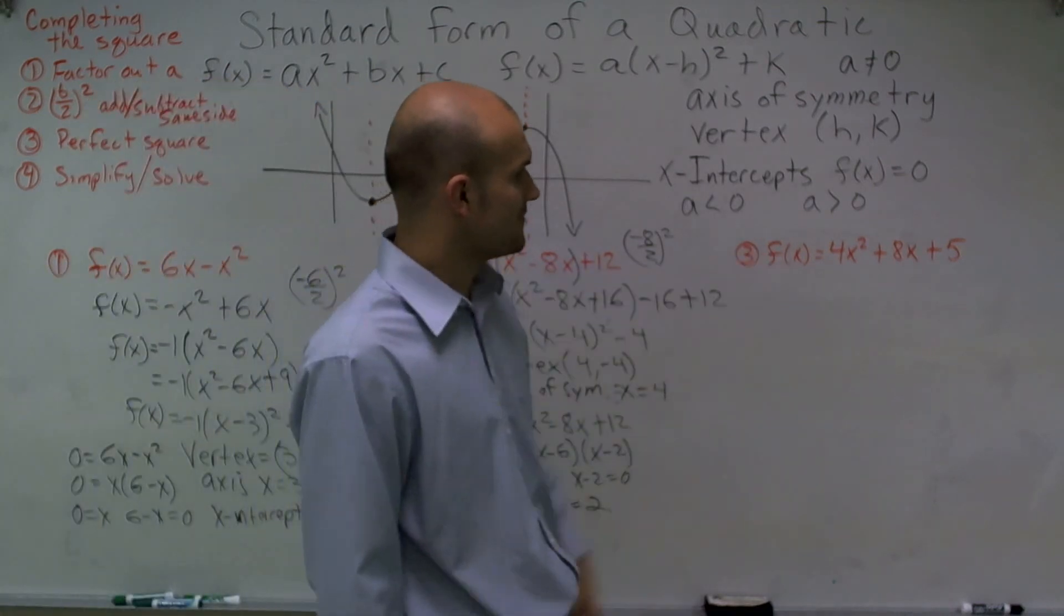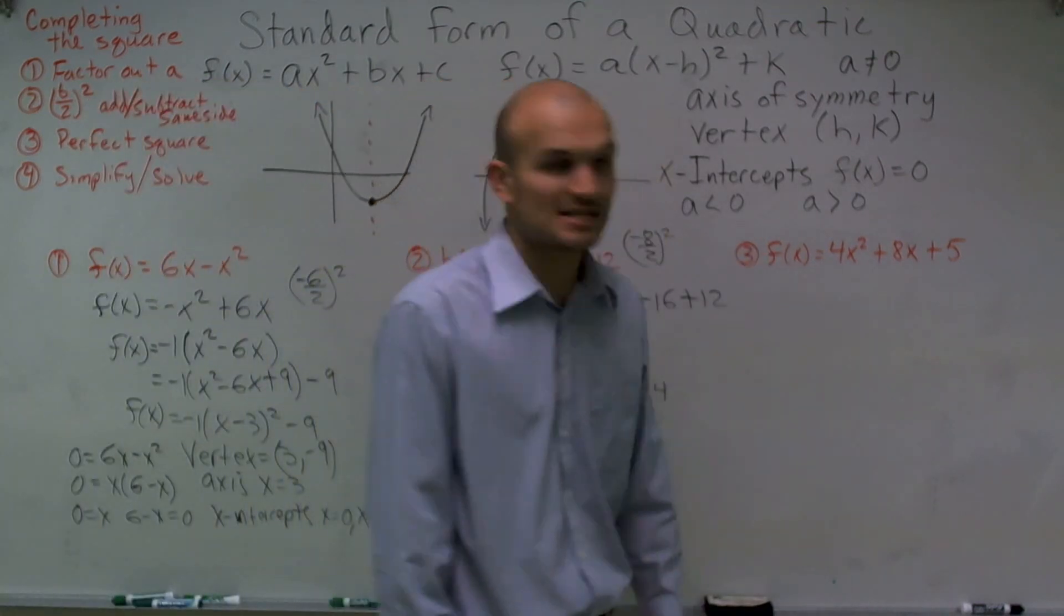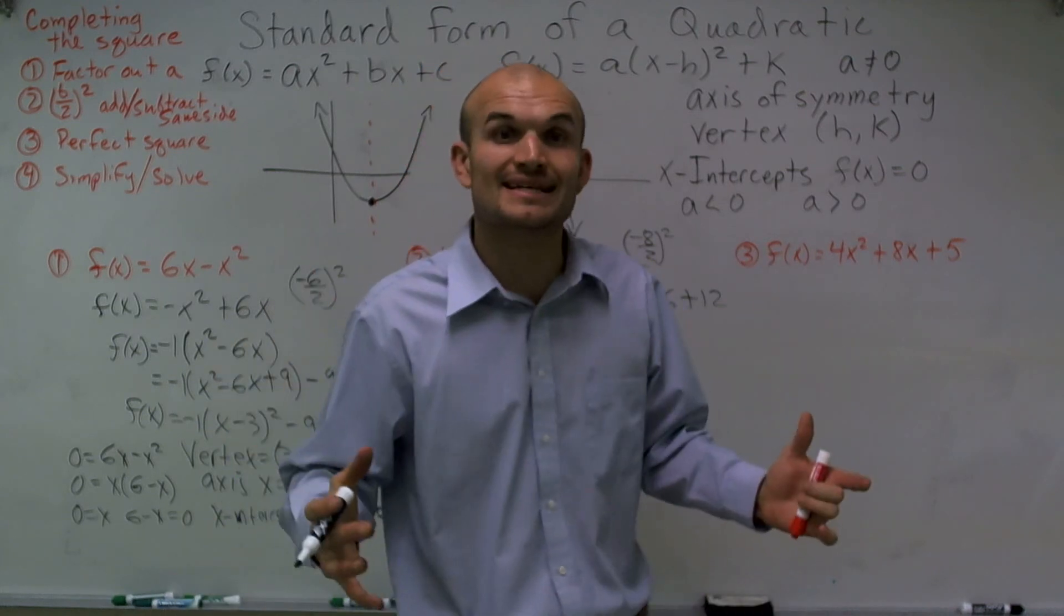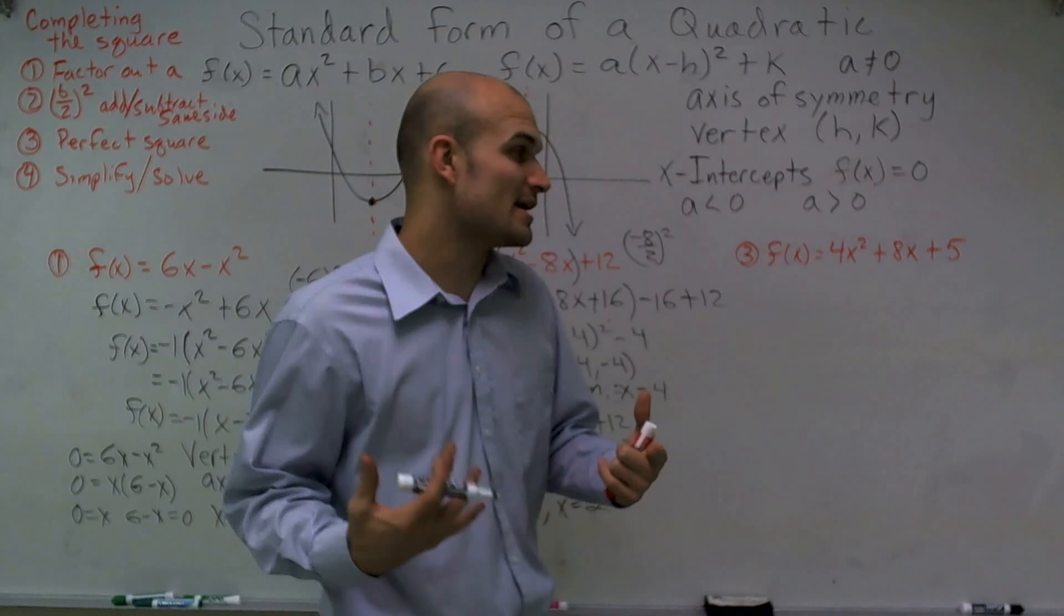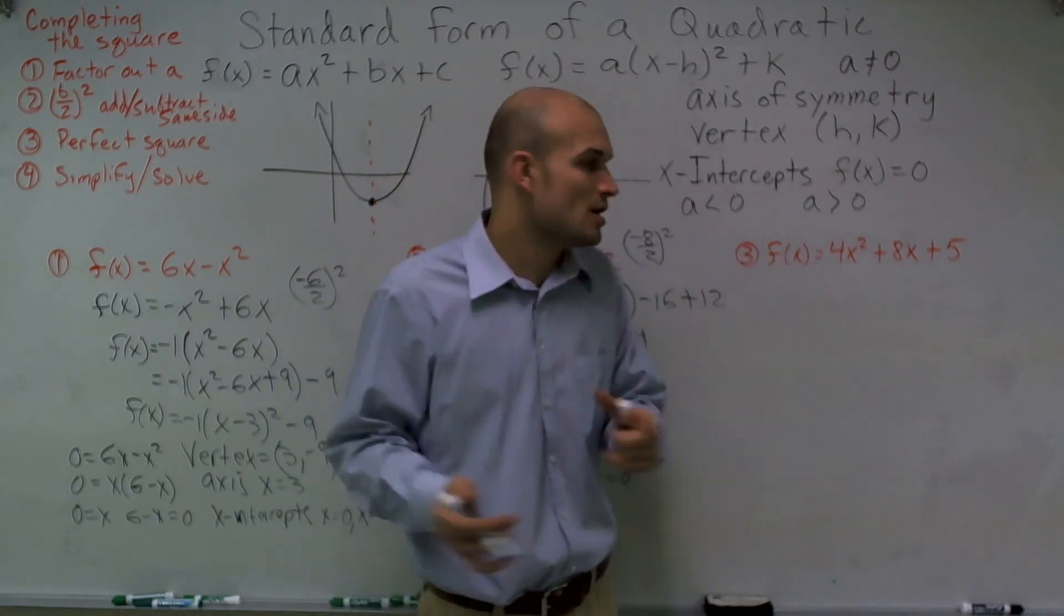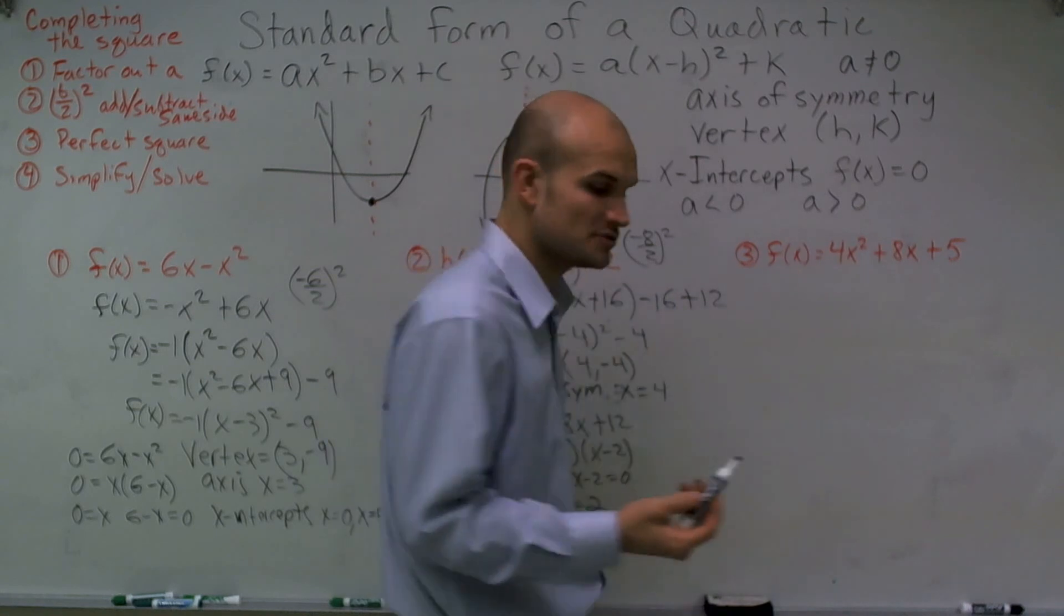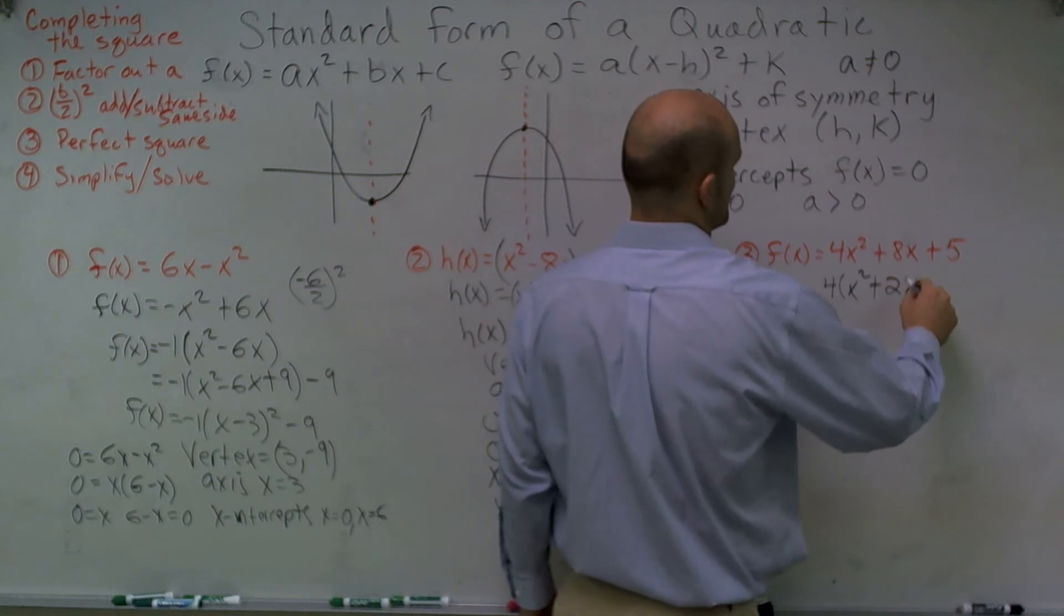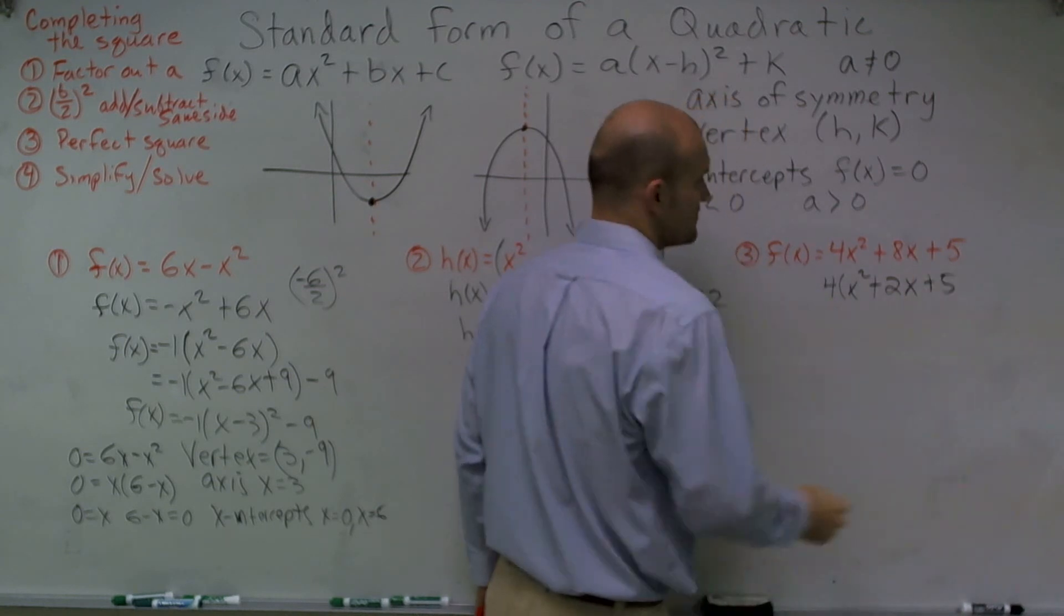Lastly, let's go into the last one. f(x) = 4x² + 8x + 5. So now we have that crazy number in front that we need to get out. So I need to factor out a 4. Now remember, we don't need to factor 4 out of all three terms. We only need to factor it out of the first two terms. So I factor out a 4, and I'm left with x² + 2x + 5.